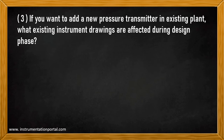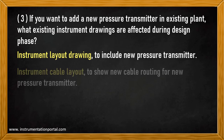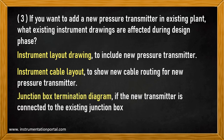Question number three: if you want to add a new pressure transmitter in an existing plant, what existing instrument drawings are affected during the design phase? First, the instrument layout drawing shall be revised to include the new pressure transmitter. The instrument cable layout must include new cable routing for the new pressure transmitter. The junction box termination diagram must show the new transmitter connected to the existing junction box — the terminal number previously intended for spare shall now indicate the new connection, showing that the terminal strips are now occupied. If a new junction box is needed, then a new drawing is required.